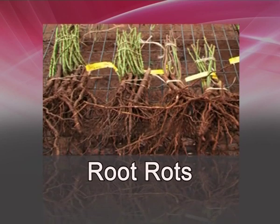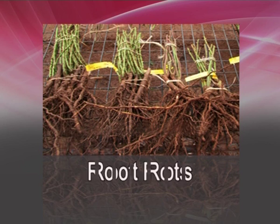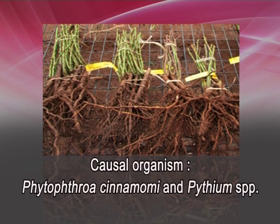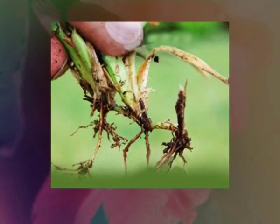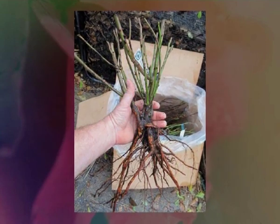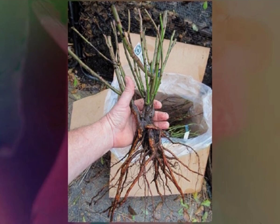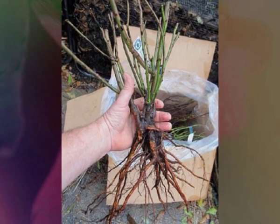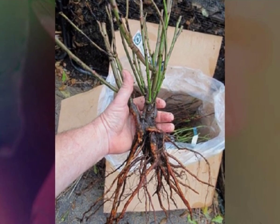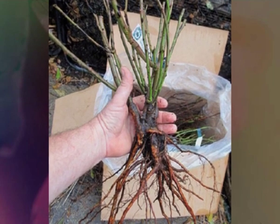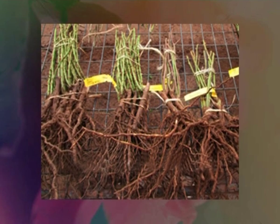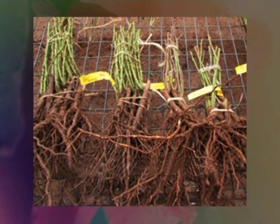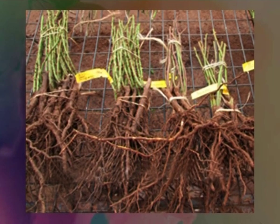The next important disease is root rot. It is caused by Phytophthora cinnamomi and Pythium species. Symptoms: roses affected by root rot wilt and may eventually die. The root ball may be water-soaked, soft, and brown. Common sources of Phytophthora cinnamomi are infected soil or irrigation water that has been in contact with the soil. Pythium affects plants in a similar manner but is more often a sign that plants are being stressed by high salinity, low pH, or waterlogging.